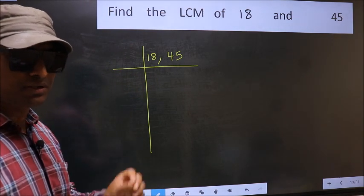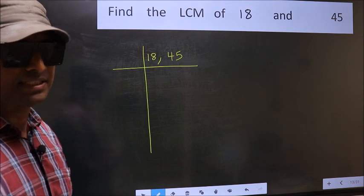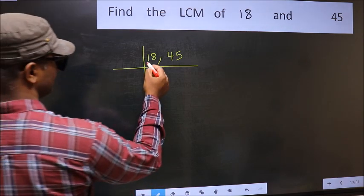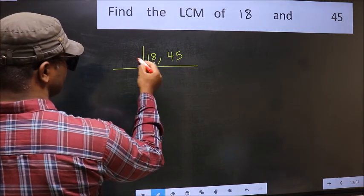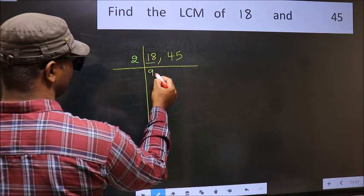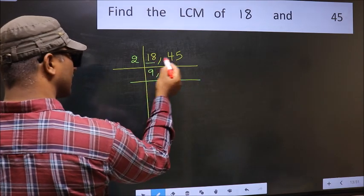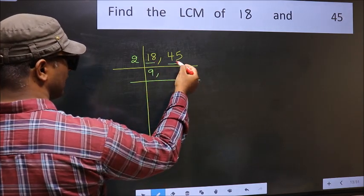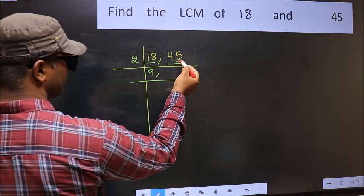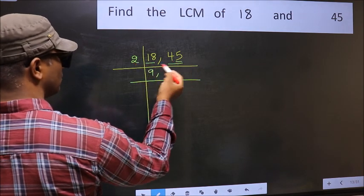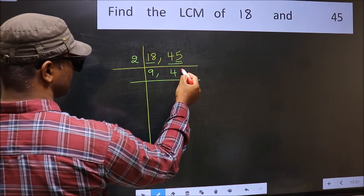Now focus on the first number, which is 18. 18 is 2 nines. The other number, 45. Last digit 5, not even. So this is not divisible by 2. You write it down as it is.